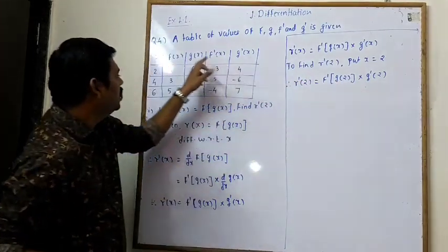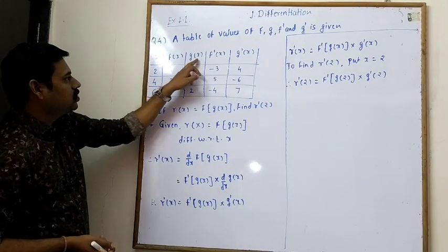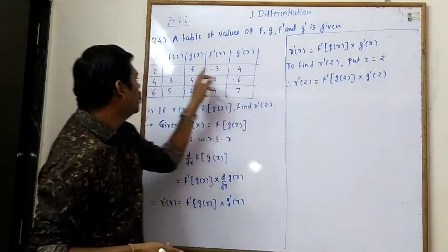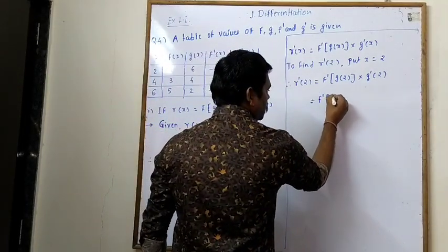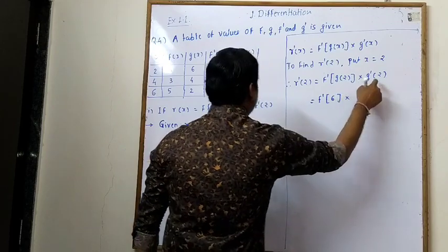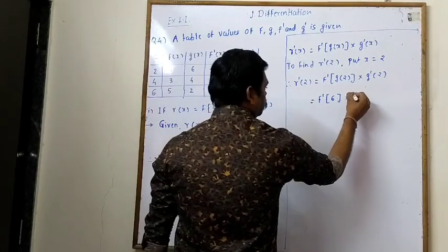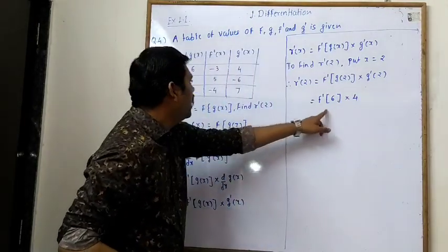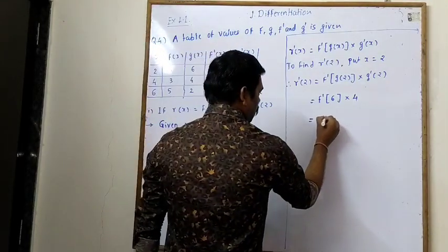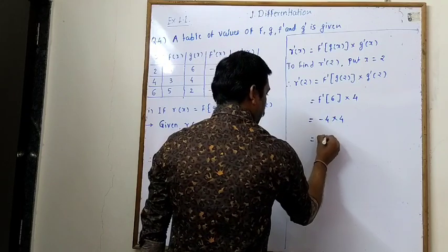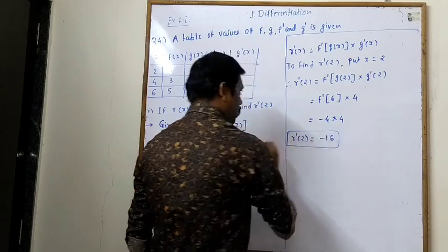From the table, g(2) = 6 and g'(2) = 4. So r'(2) = f'(6) · 4. f'(6) = −4. Therefore −4 into 4 equals −16. Wait — f'(6) = −4, so r'(2) = −4 into 4 = −16. This is r'(2).